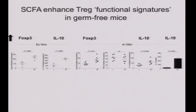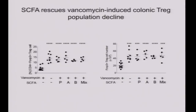Beyond population frequency and number, we were interested in whether SCFAs did more. Canonical ways to assess T-regulatory cell function include looking at FOXP3 levels and IL-10, an important anti-inflammatory cytokine. Whether we took cells directly from animals treated with SCFAs or treated regulatory T-cells in vitro, we saw that both FOXP3 levels and IL-10 production from Tregs increased. Short-chain fatty acids, shown here for propionate, increased both FOXP3 levels and IL-10 production in germ-free mice.